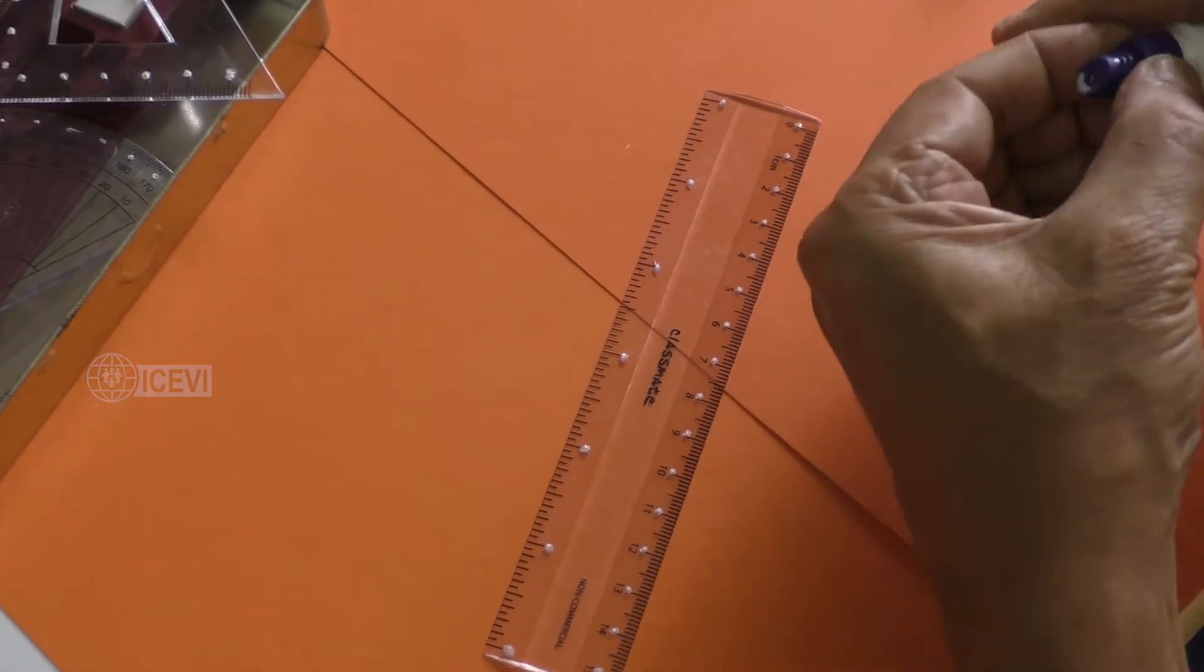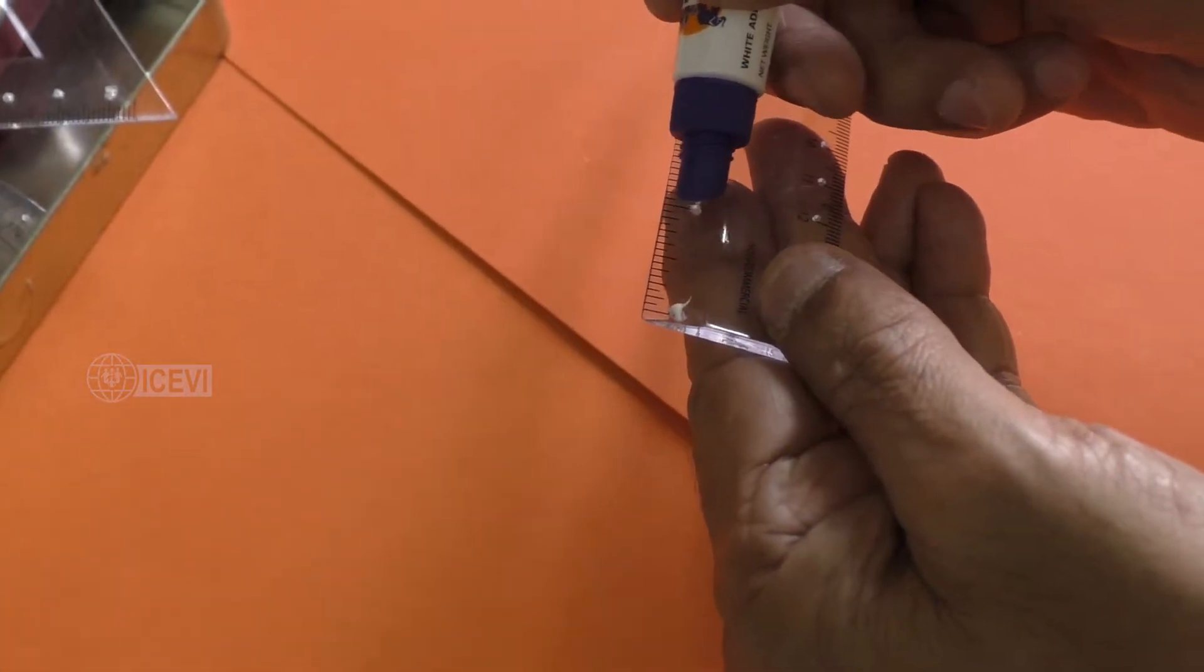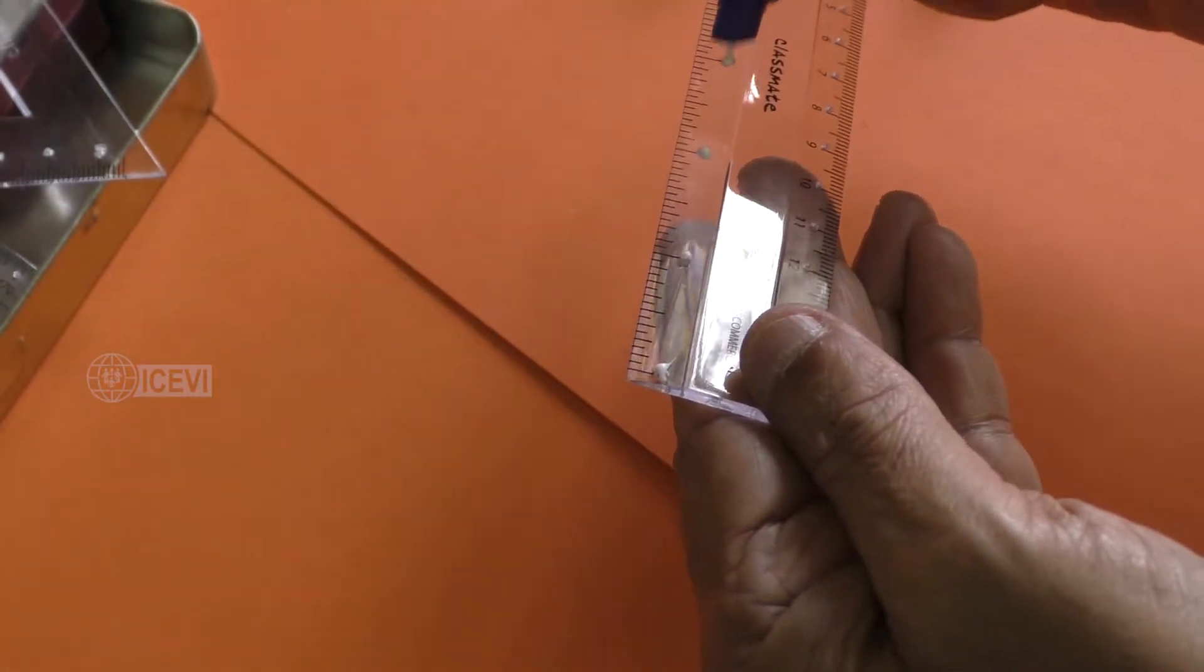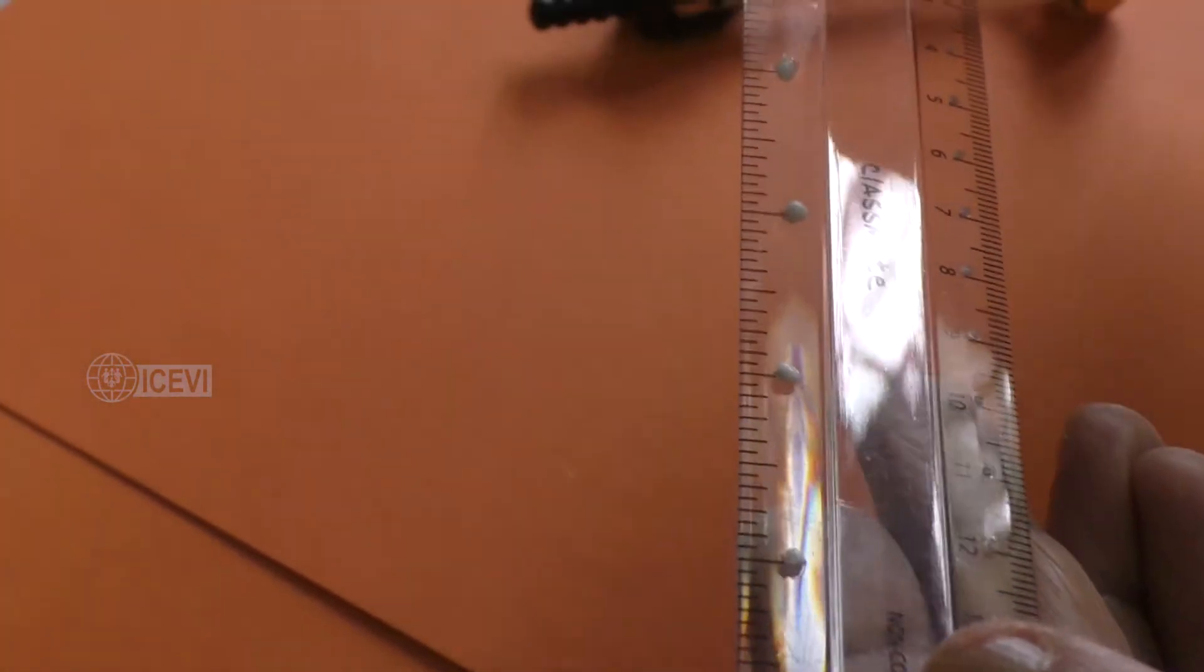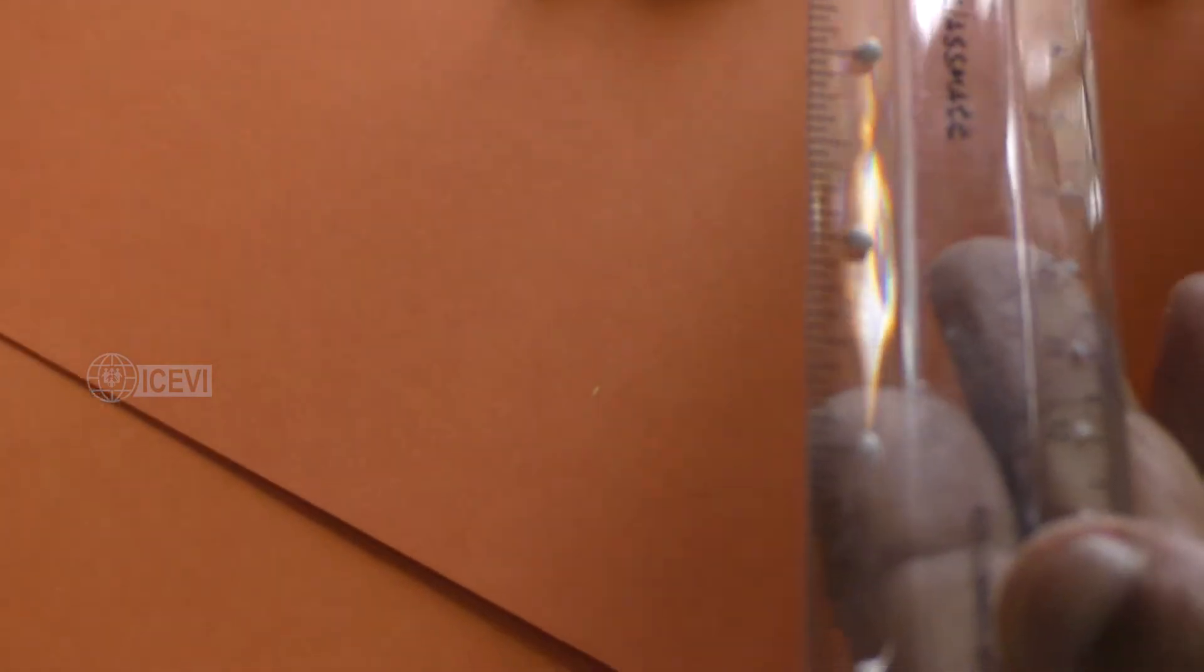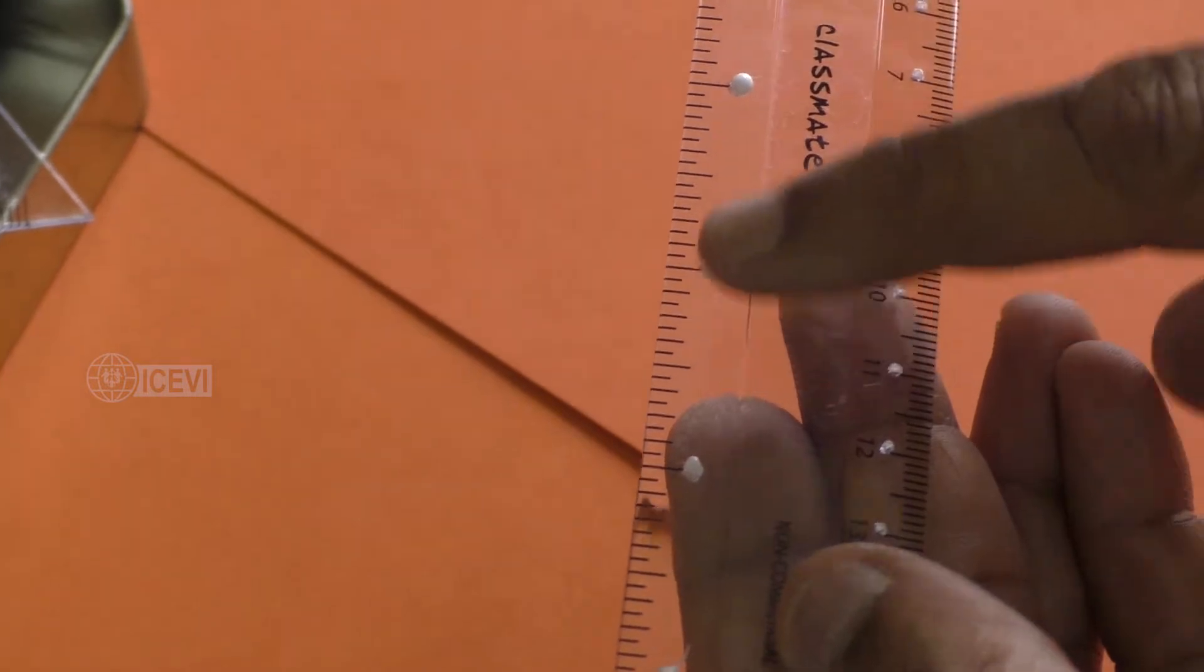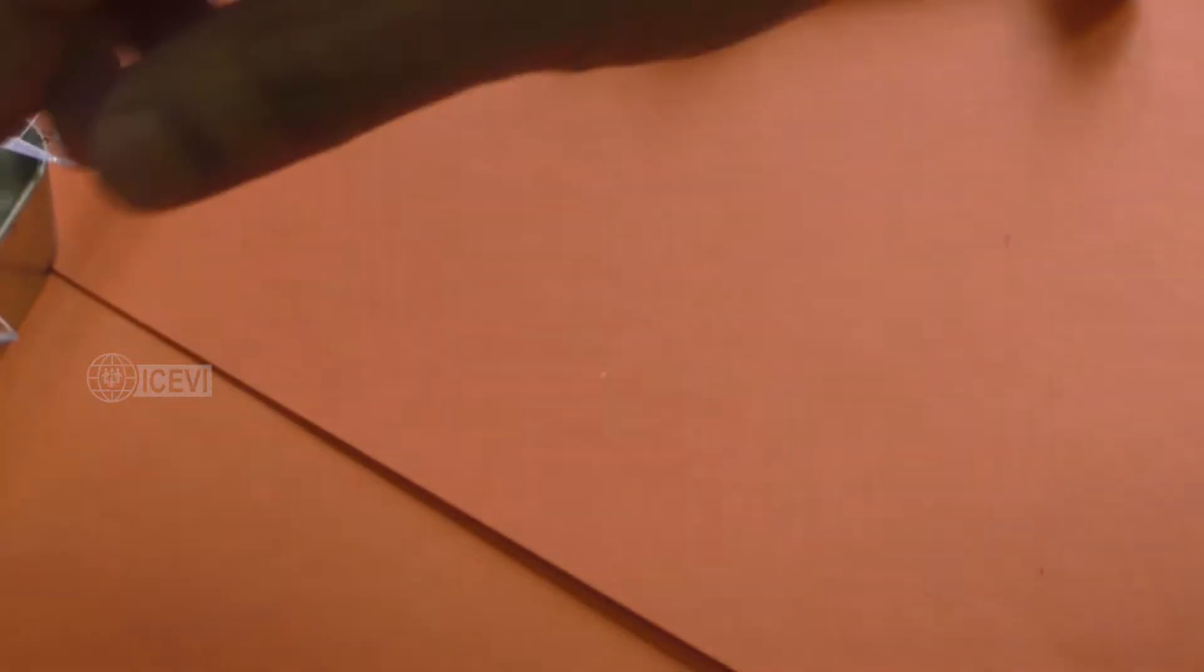Then after some time it will get dried and it will be smooth for the child to explore. These are very smooth. After some time it will become dry.